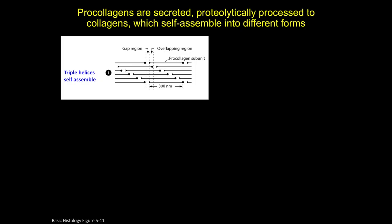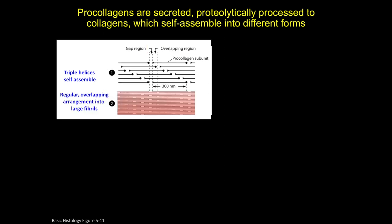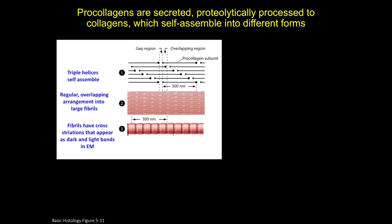These fibrils can assemble further to form large collagen fibers that can become even further bundled. The newly cleaved triple helices self-assemble into regular overlapping arrangements where the spaces between head and tail ends line up as repeating gaps, while parts of the head and tails overlap in the so-called overlapping regions. This regular arrangement results in the appearance of light and dark bands when viewed under electron microscopy.